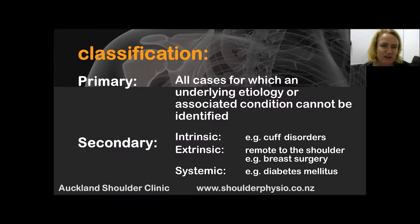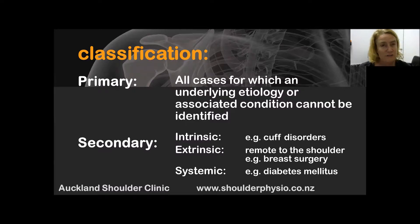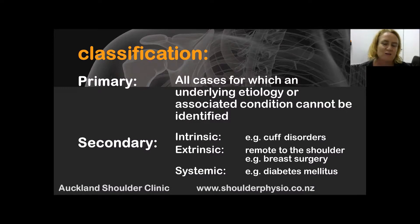With regards to classification, you can have a primary frozen shoulder or stiff shoulder, which encompasses all those things for which we don't know what causes your shoulder condition. A secondary stiff shoulder is a result of either an intrinsic, extrinsic, or systemic cause. Intrinsic is something within the shoulder, such as a cuff disorder or a fracture of the greater tuberosity. Extrinsic is something remote to the shoulder, like breast surgery causing immobilization, or systemic causes like diabetes or thyroid conditions.